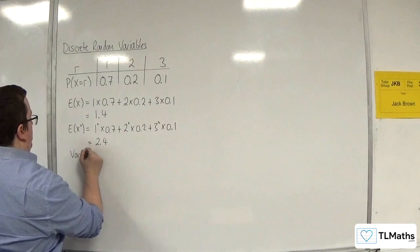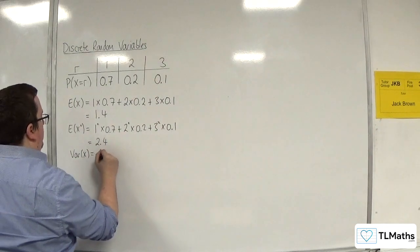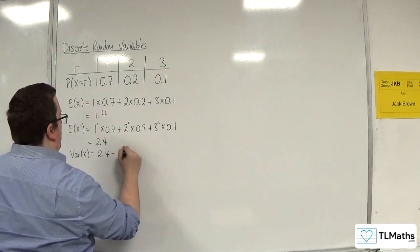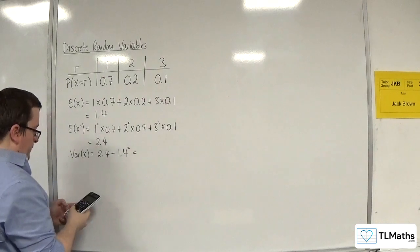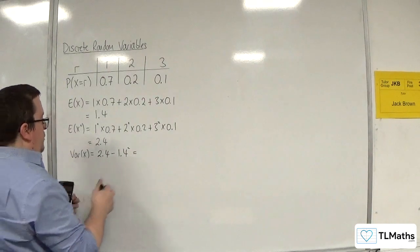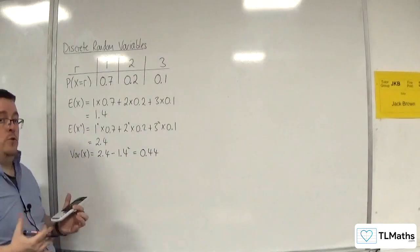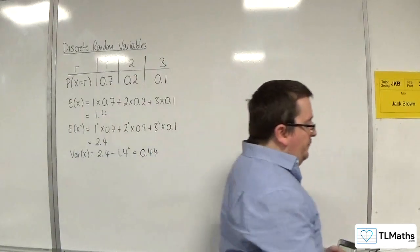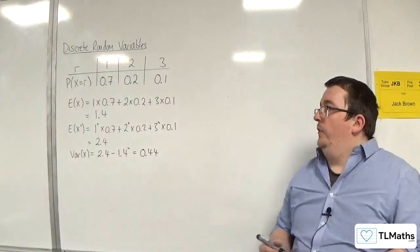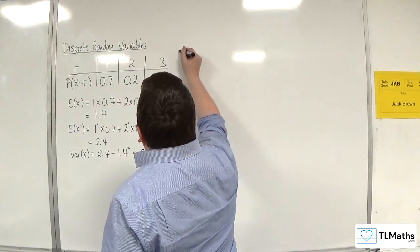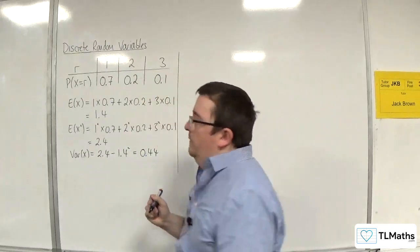So var of x will be E of x squared, 2.4, take away 1.4 squared, which is 0.44. So I've now got var of x. So that is my opening introduction to this.